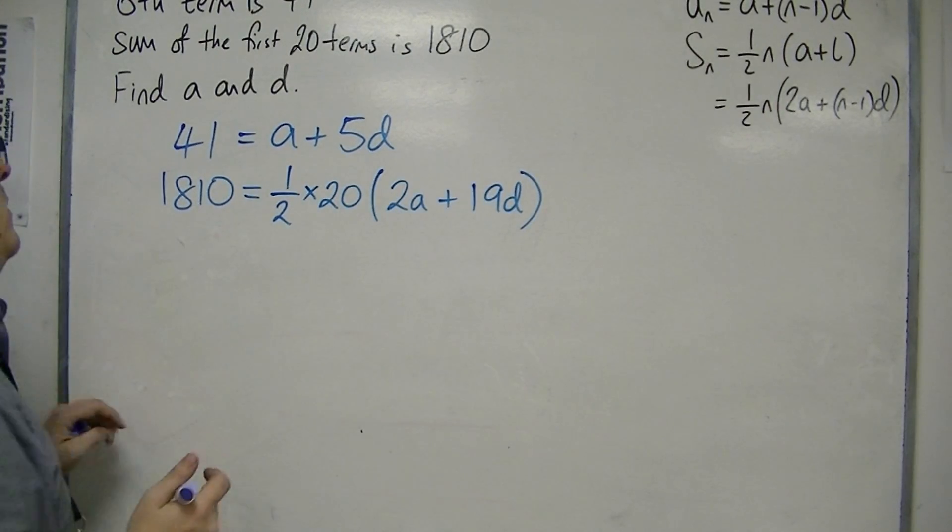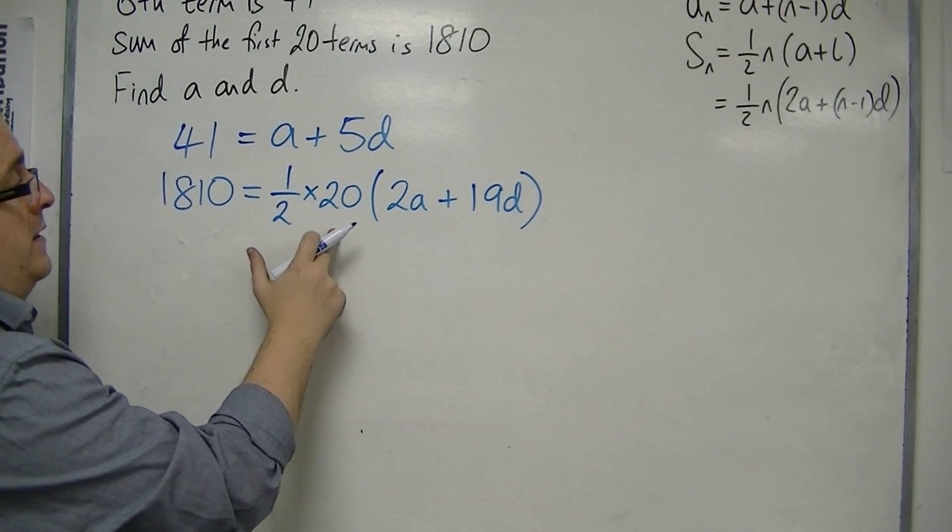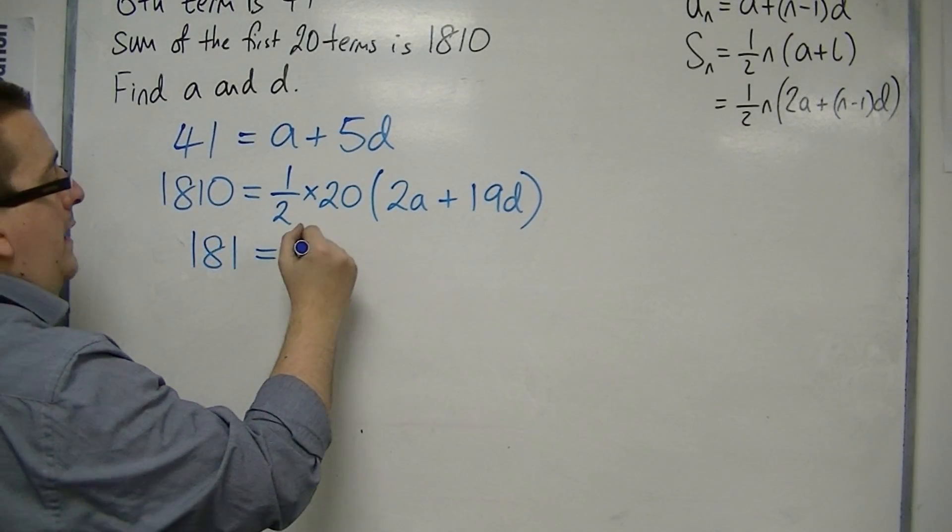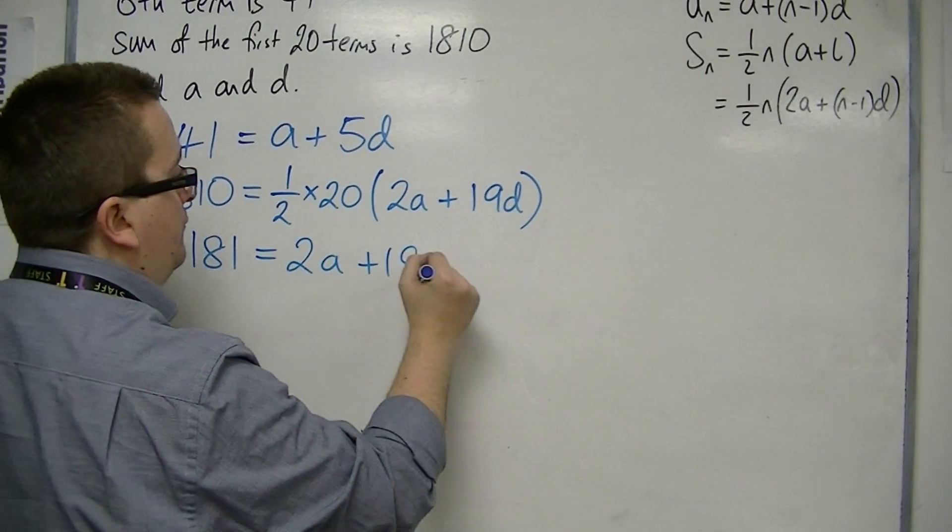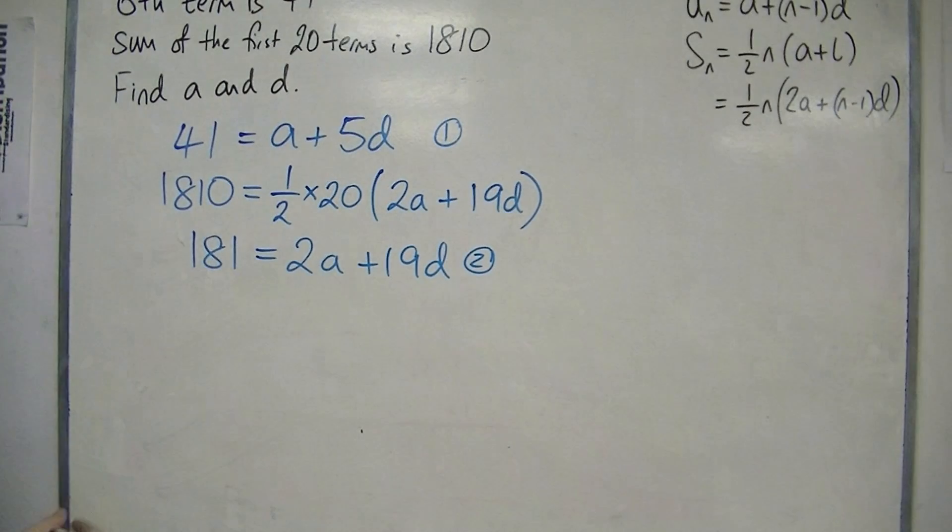So, I'm going to simplify that second one a little bit by, well, one-half times 20 is 10, so divide both sides by 10, and I get this. So, this is my equation 1, and that's my equation 2.